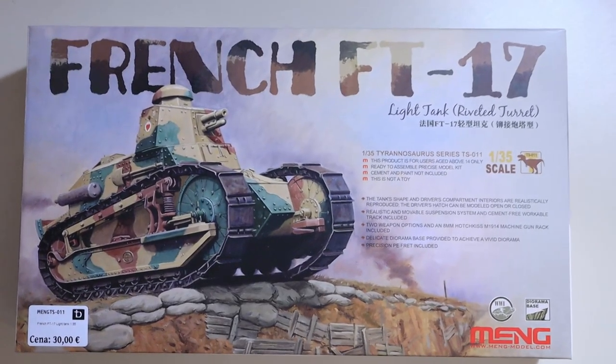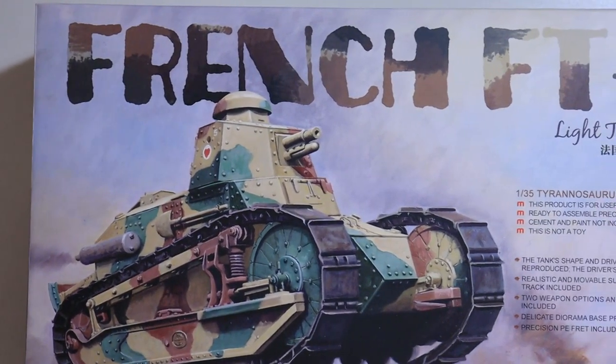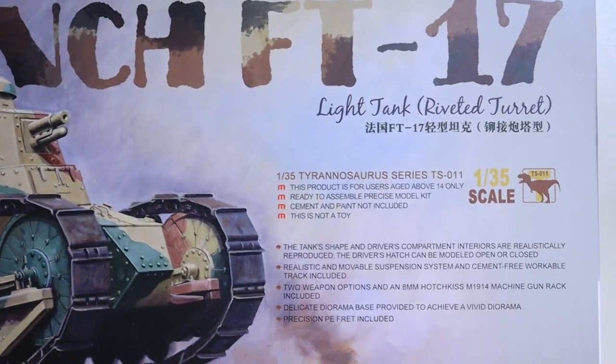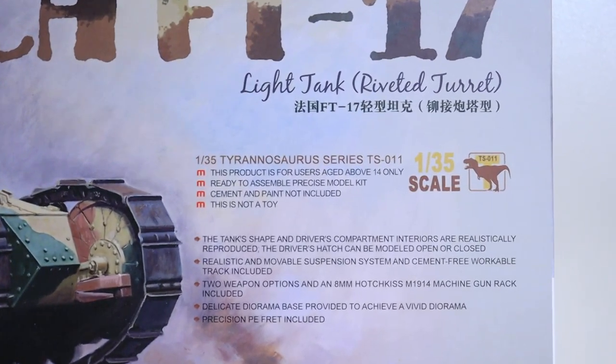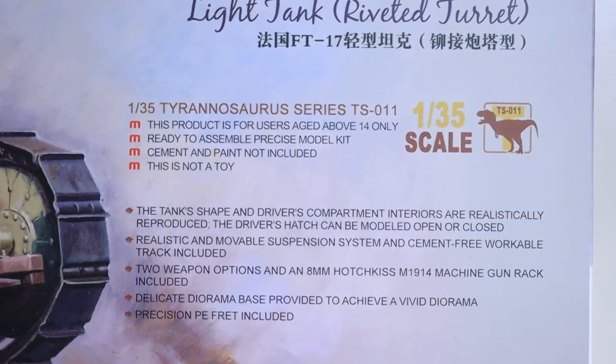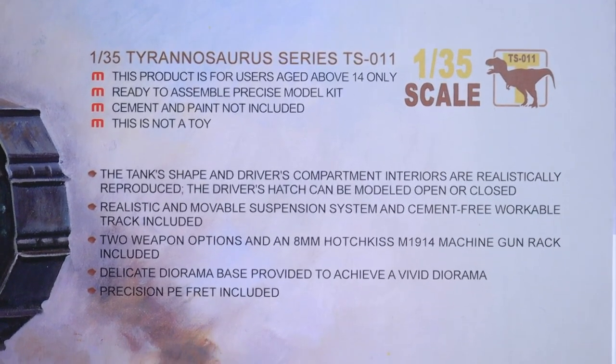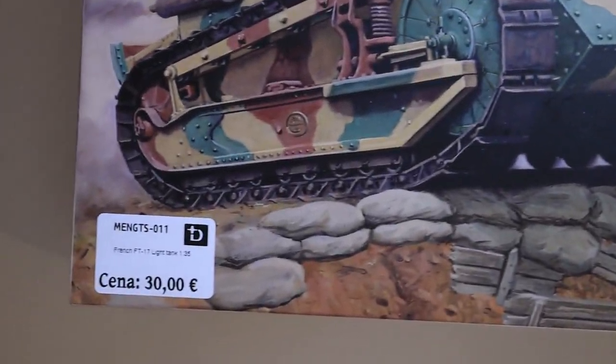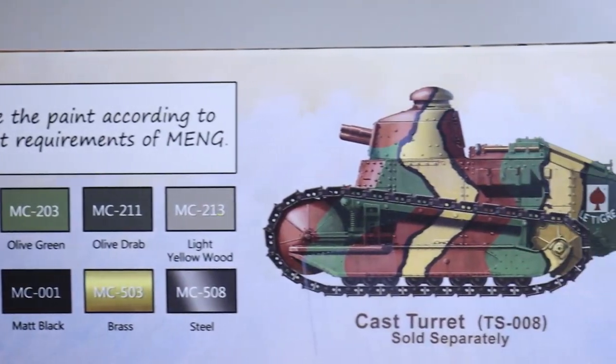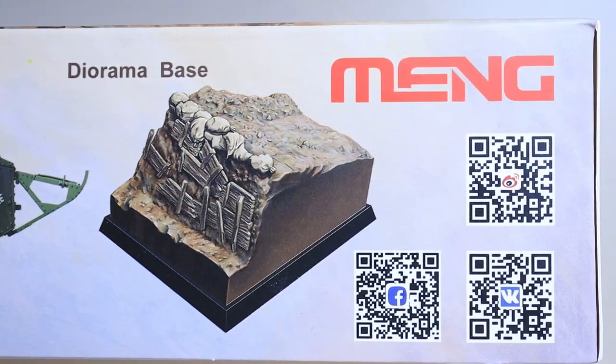And we start our review with this French FT-17 tank with riveted turret model number TS-011. It is a 1:35th scale model that is around 30 euros, depending on where you are. And it has some cool features, one of which is a diorama base. It has interior parts for the driver and it can be displayed with an open or closed hatch. It has a movable suspension system and workable tracks that are included. You have to assemble them. It has options for an 8mm Hotchkiss or M1914 machine gun rack that is also included.